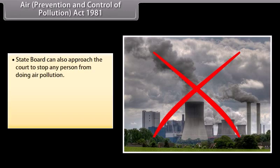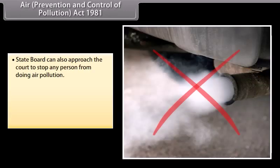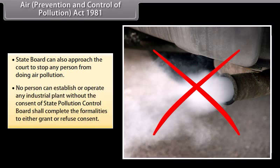The State Board can also approach the court to stop any person from causing air pollution. No person can establish or operate any industrial plant without the consent of the State Pollution Control Board, which shall complete the formalities to either grant or refuse consent.